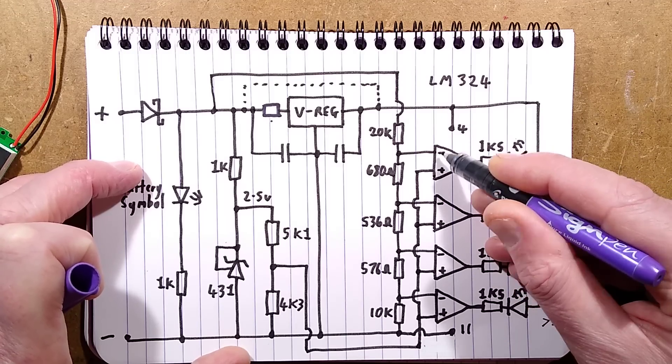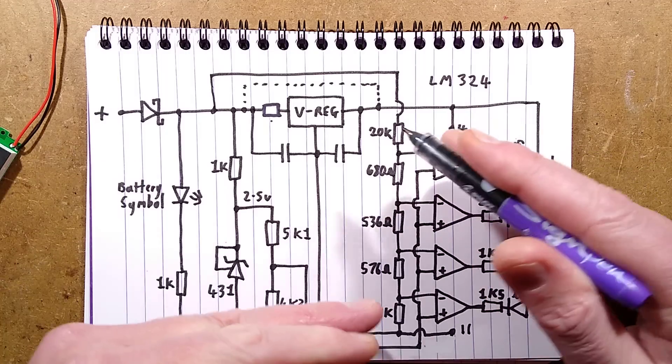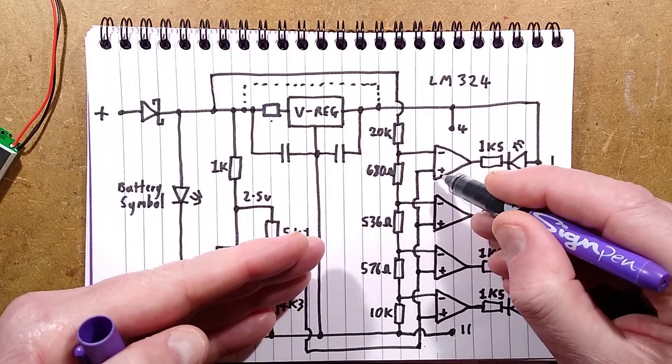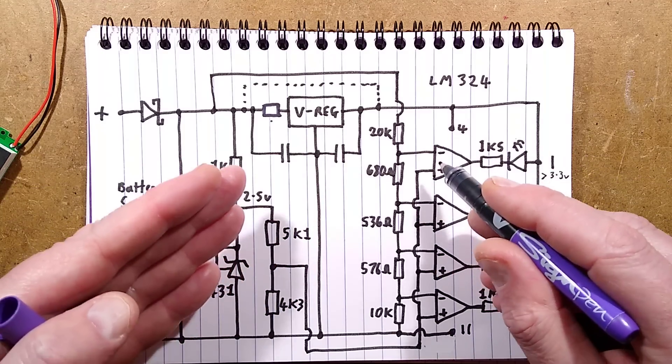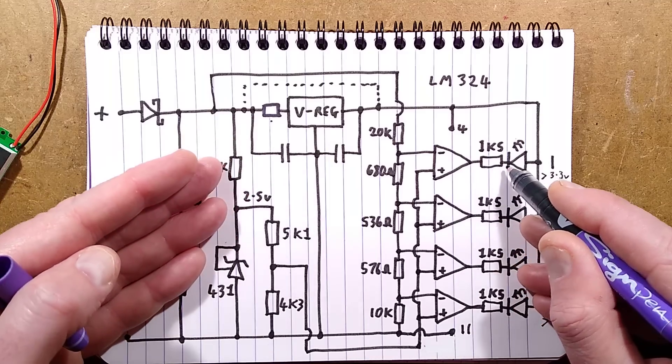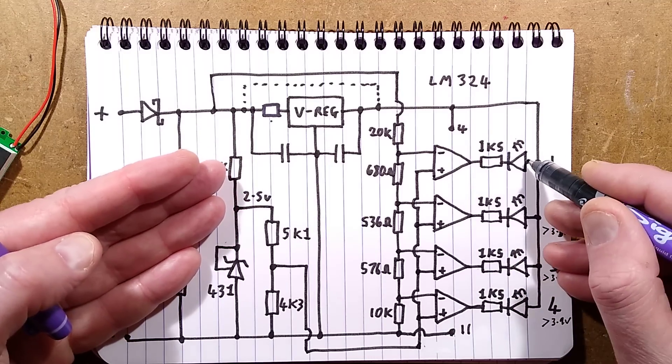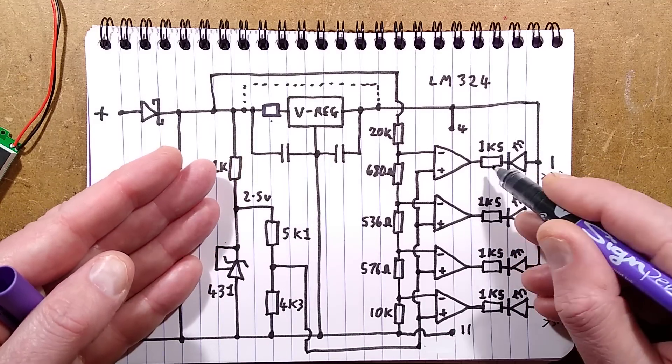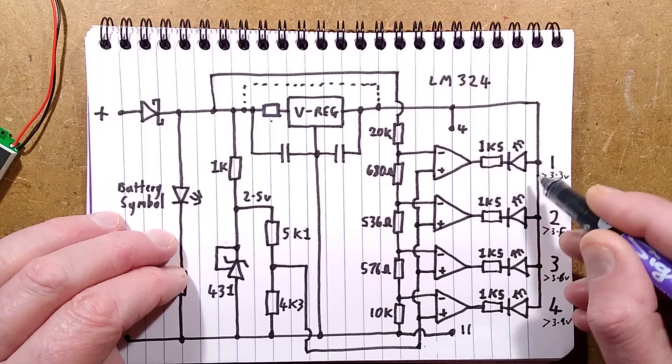When one goes above the other it will change the output state according to the polarity they're connected to. In this case when the voltage is falling down, the output was positive and the LED actually goes out because when it's negative the LED is lighting.